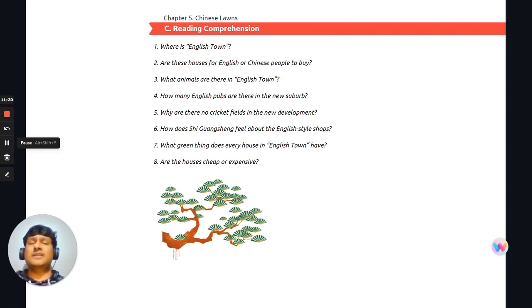Number five, why are there no cricket fields in the new development? Number six, how does Xi Guanqiang feel about the English style shops? Number seven, what green thing does every house in English town have? And number eight, are the houses cheap or expensive? Remember, pause the video, answer them, and when you get back, I will give you the answers.